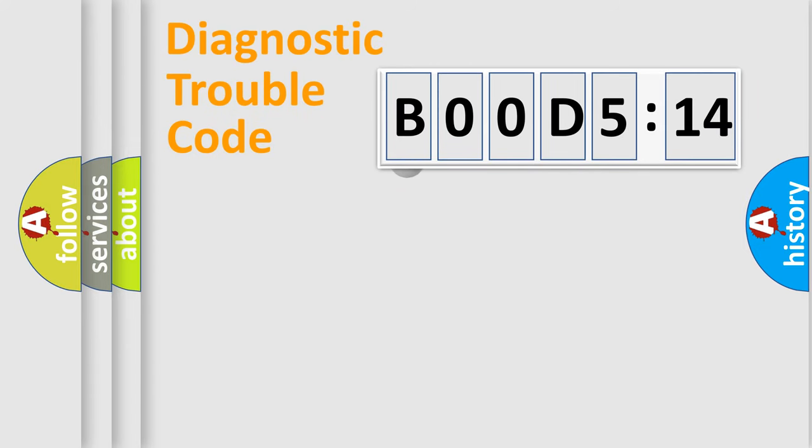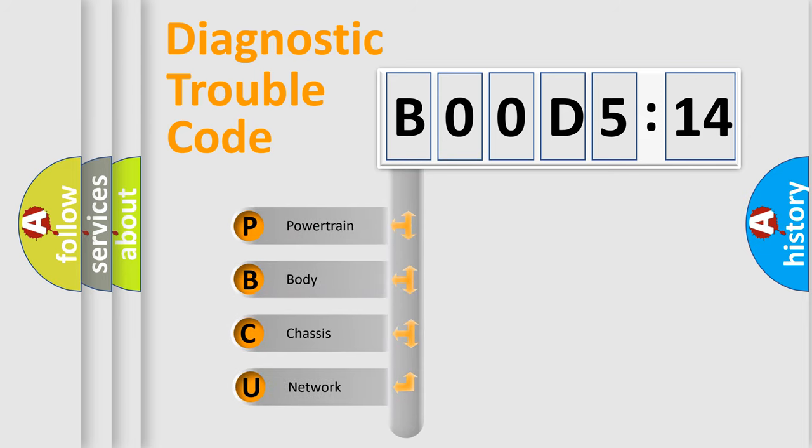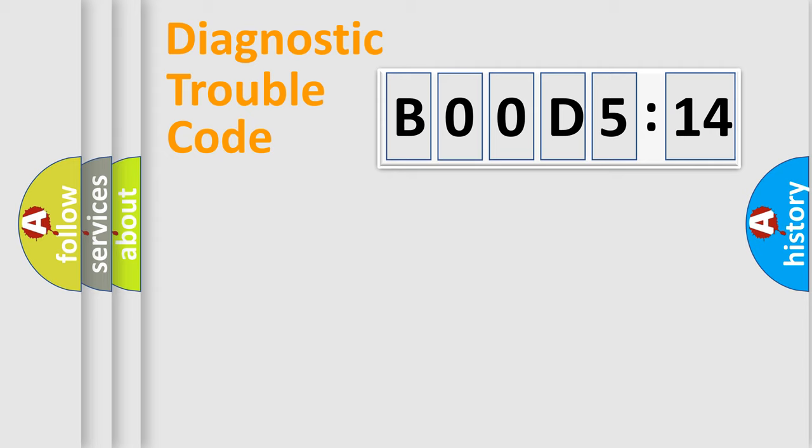First, let's look at the history of diagnostic fault code composition according to the OBD2 protocol, which is unified for all automakers since 2000. We divide the electric system of automobile into four basic units: Powertrain, Body, Chassis, and Network.